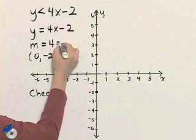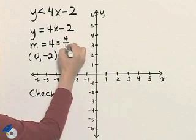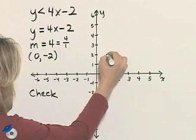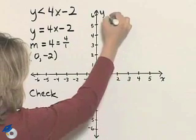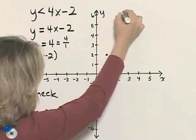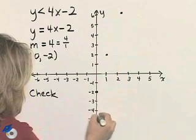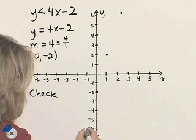The slope is 4, which is equivalent to 4 over 1. So I can go up 4 and over 1. I'll do that one more time since I have room on my graph. I'll go down 4 and left 1 as well.